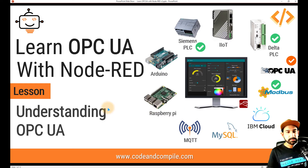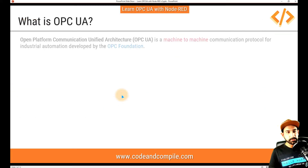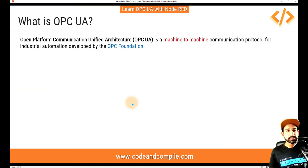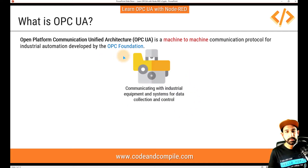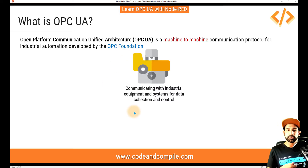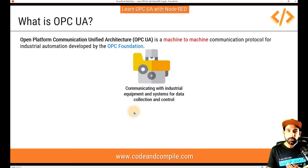OPC UA stands for Open Platform Communication, and it is used for machine-to-machine communication. It was developed by the OPC Foundation. For example, if we have a machine in the industry and we want to communicate with it, what features does OPC UA bring to the table?